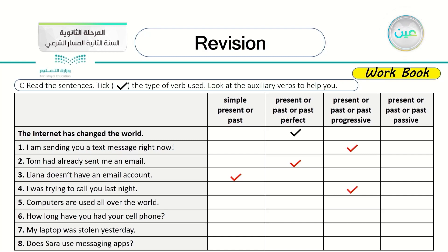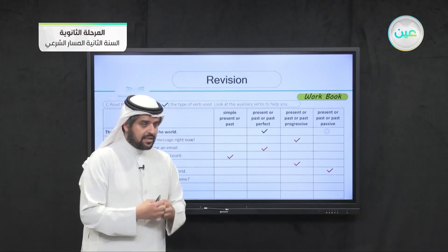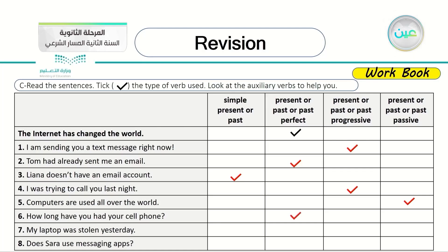Number five: 'Computers are used all over the world.' This is passive because he didn't mention who uses the computer. Number six: 'How long have you had your cell phone?' This is past perfect, due to 'have had.'